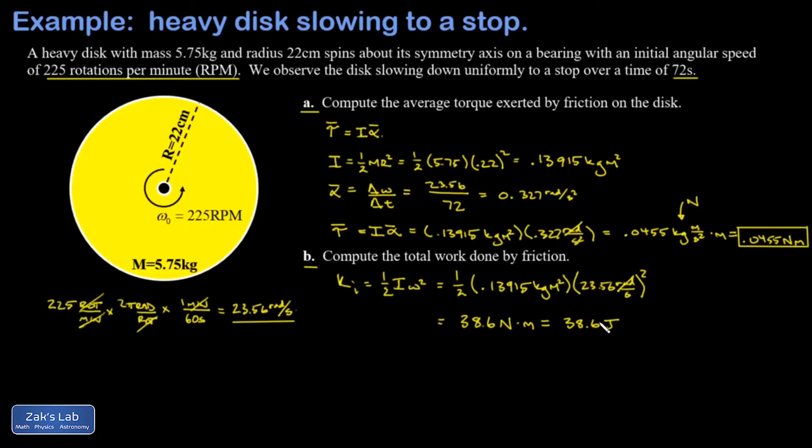Friction removed all that energy in the final state where nothing is moving at all. So I know the work done by friction, and here I do care about the sign. The work done by friction is negative because it's removing energy from the system: -38.6 joules, and we're done.